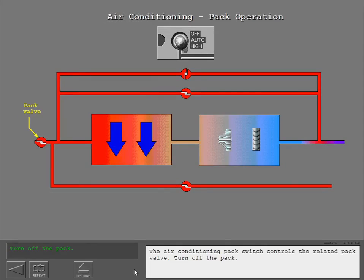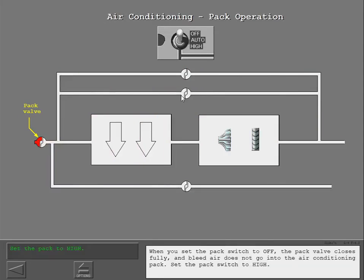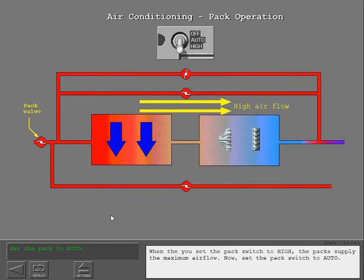Turn off the pack. When you set the pack switch to off, the pack valve closes fully and bleed air does not go into the air conditioning pack. Set the pack switch to high. When you set the pack switch to high, the packs supply the maximum air flow.